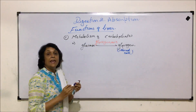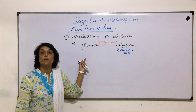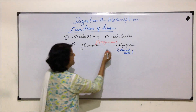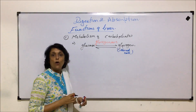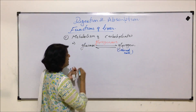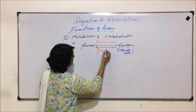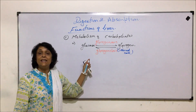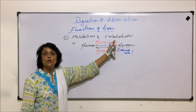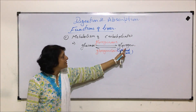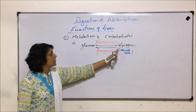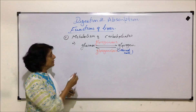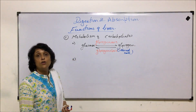If the glucose requirement is not fulfilled by diet, then glycogen is broken down to release glucose so it can generate energy. This breakdown reaction is known as glycogenolysis. Both processes — glycogenesis, the synthesis of glycogen, and glycogenolysis, the lysis of glycogen — take place in the liver.